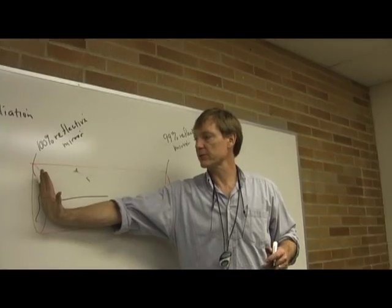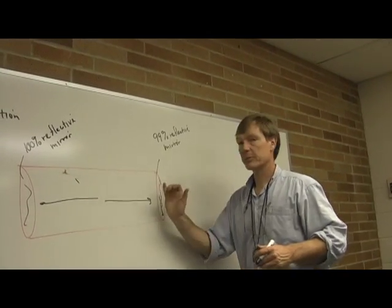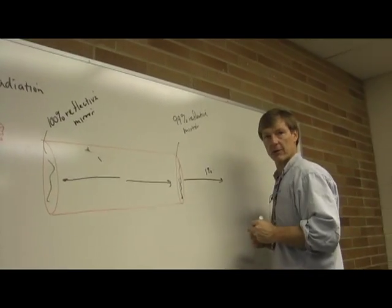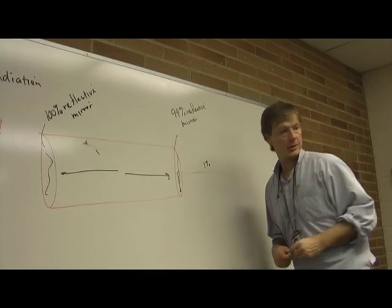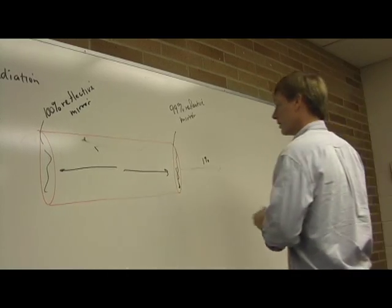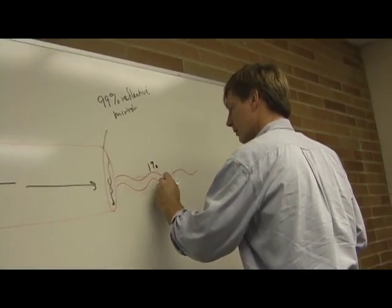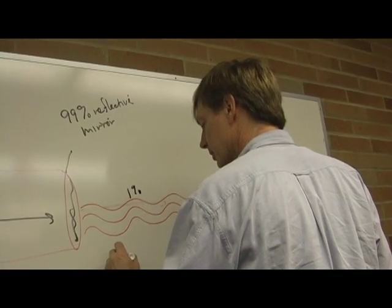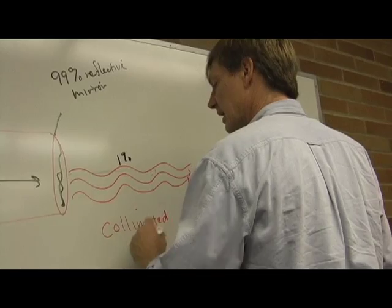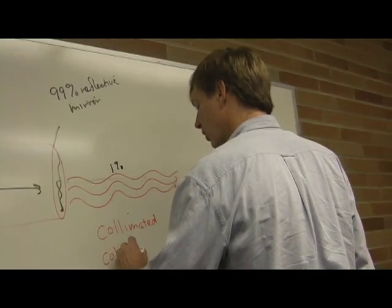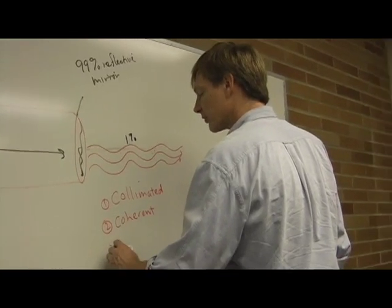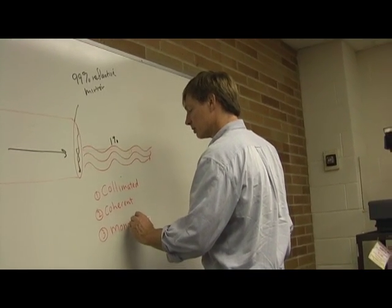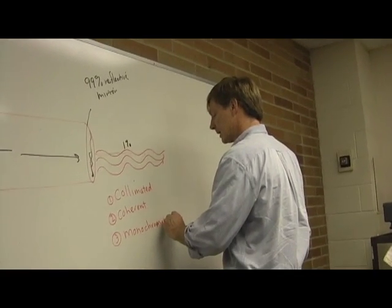Now, all the waves are reflecting back from this backside. 99% are reflecting through the business end, and 1% is heading out. That 1% of the waves is all heading in the same direction. It's collimated. It's all in phase, which means it's coherent. And it's all the same wavelength. And wavelength is the same as color. So we say it's one color. It's monochromatic. And that's a laser.